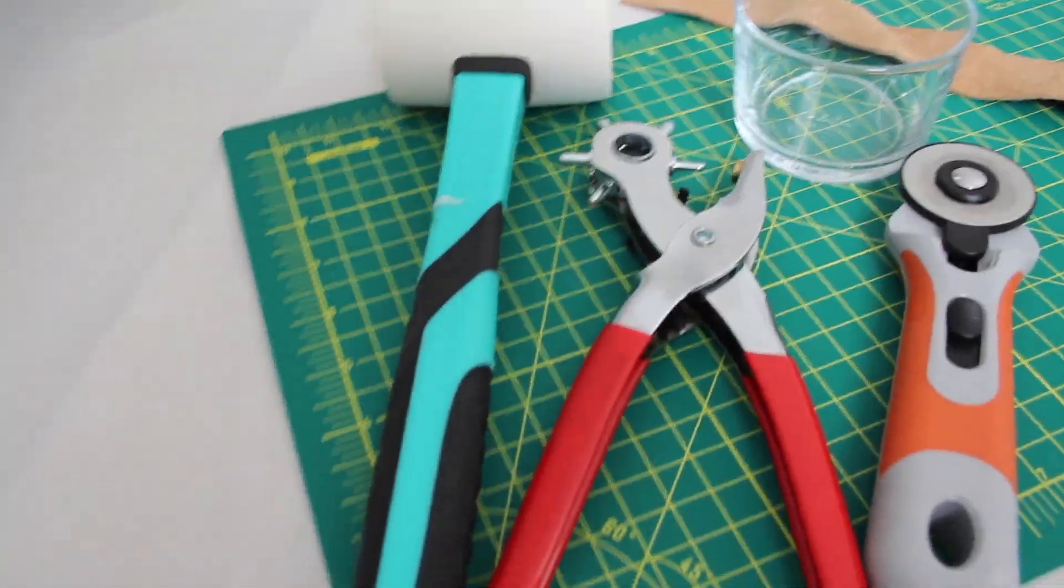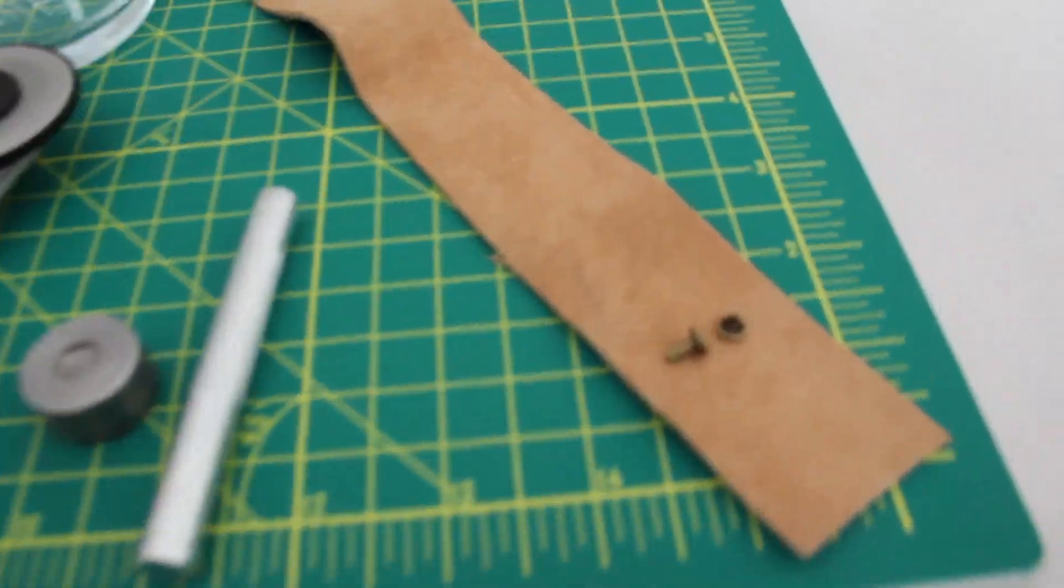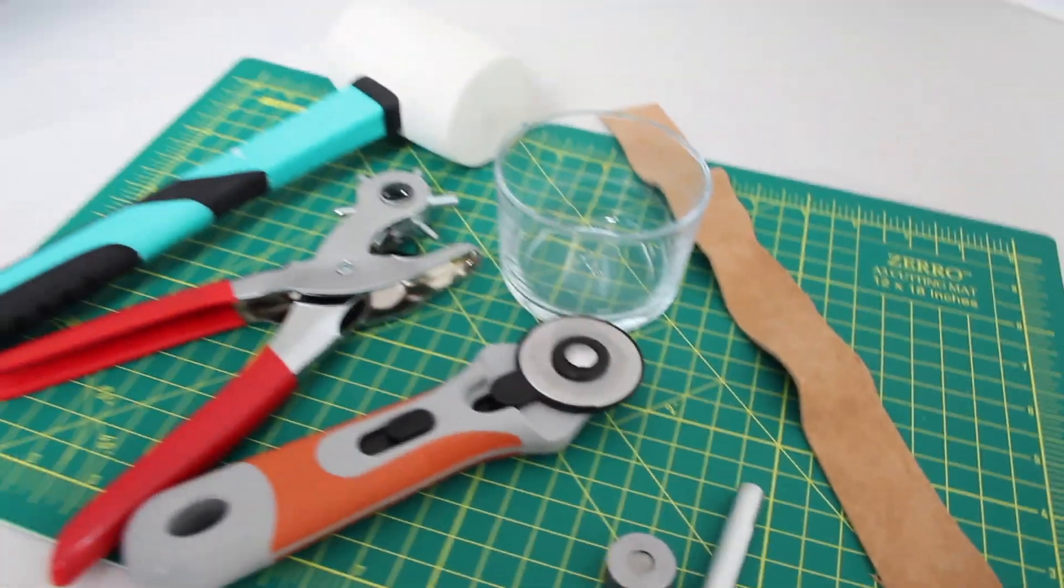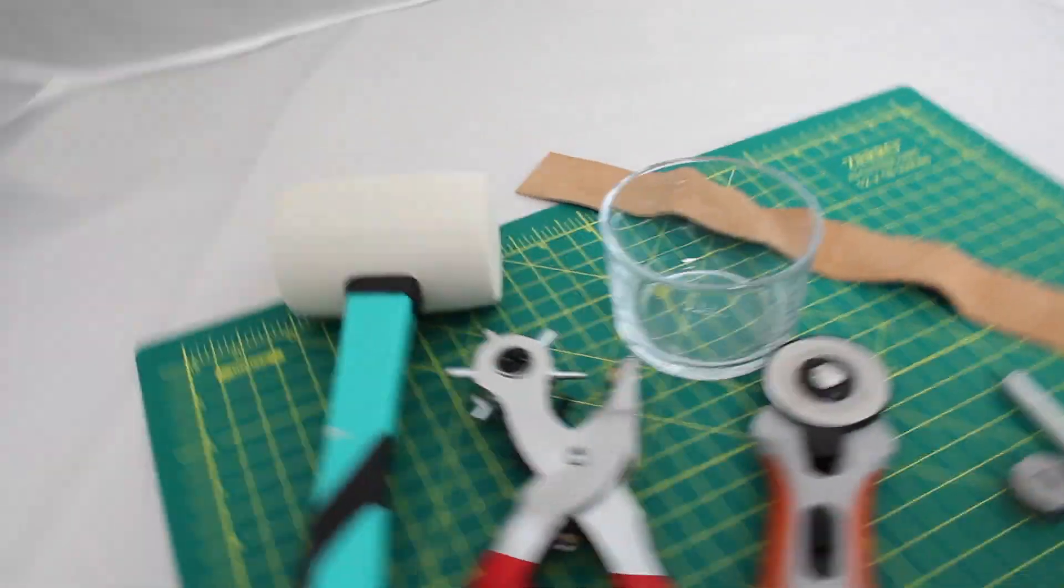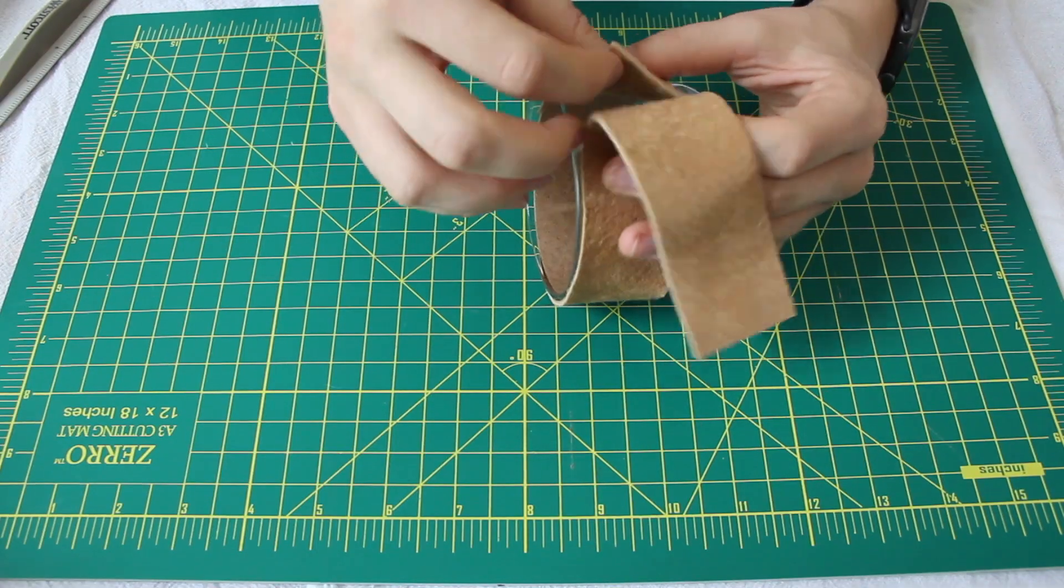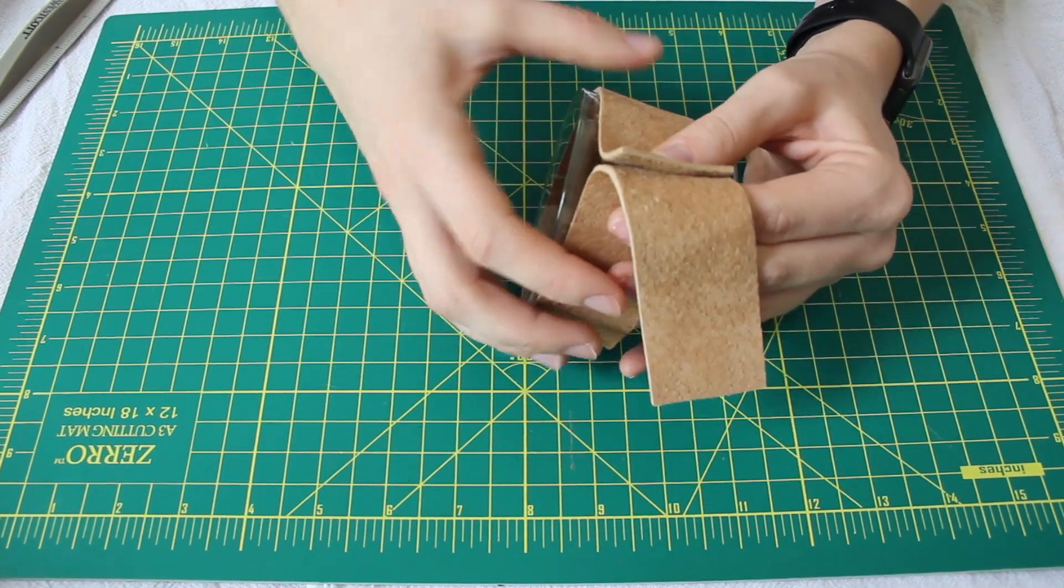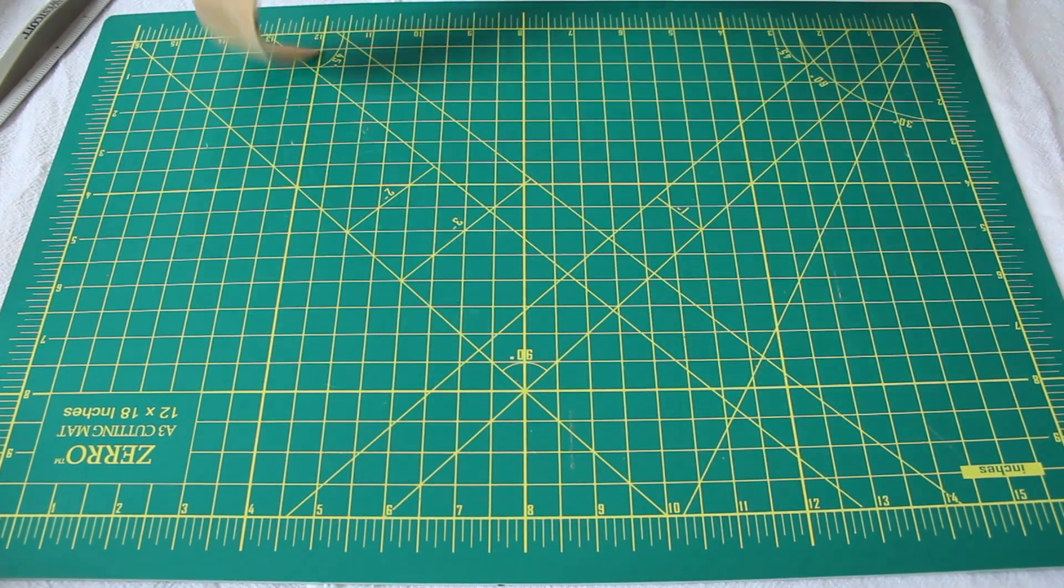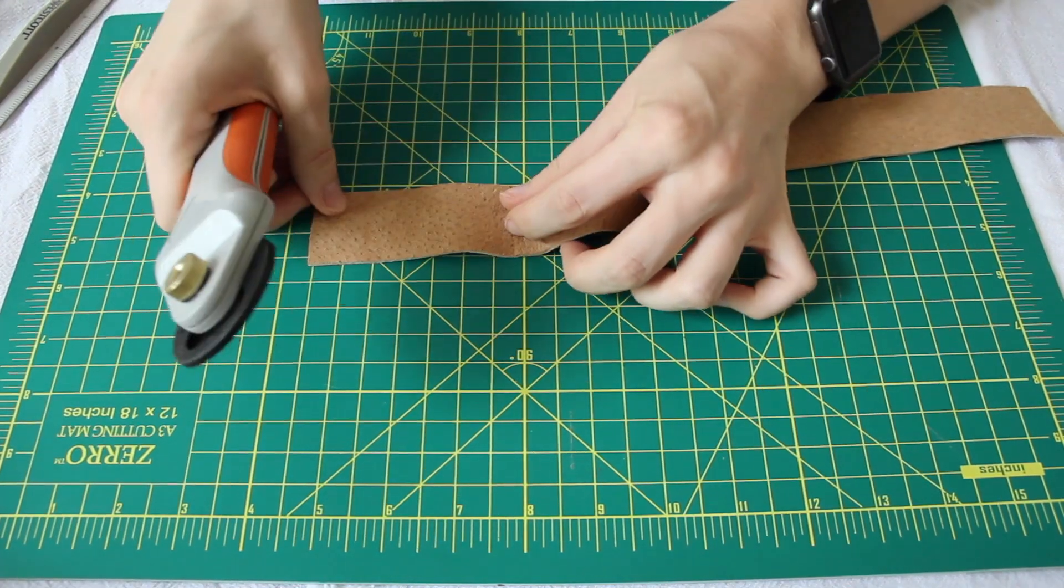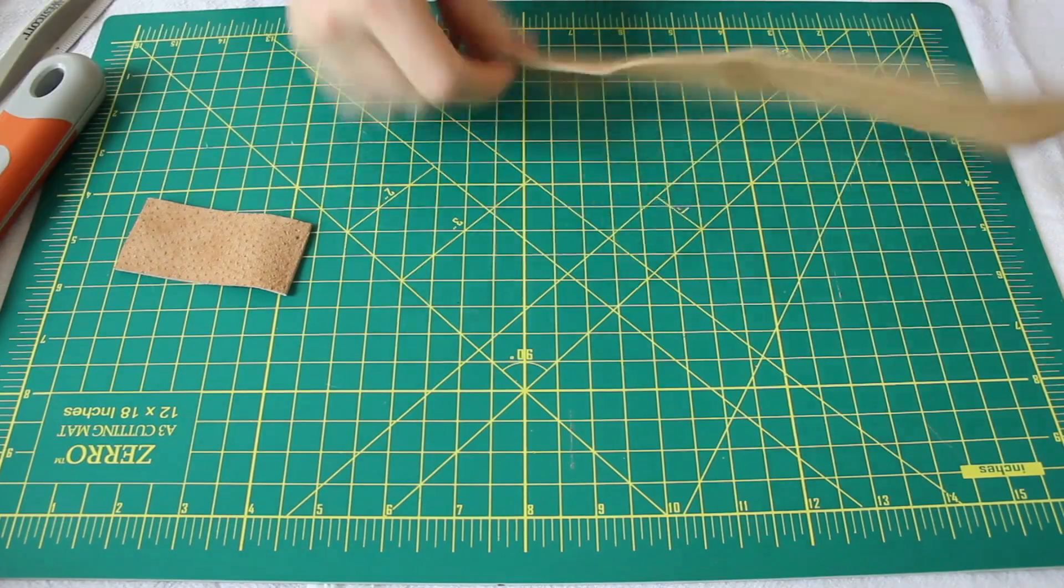For this one you're going to need a cutting mat, a mallet, a leather hole punch, a rotary knife, some rivets and scrap leather, and then whatever container you want to put the leather around. First you're going to measure your scrap leather—just bring it around the entire circumference of the container just to see how long you need it to be. Then after you do that, just cut off the excess leather.